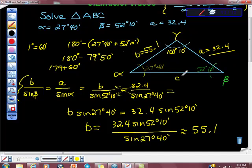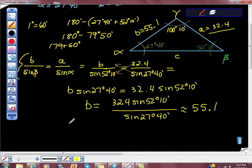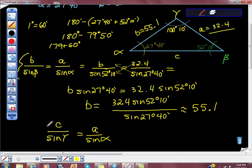That would leave us with C to do. I'll start you on it, but I'm not going to finish it with you. I would say C over sine of gamma equals A over sine alpha, and I would repeat in a very similar way to what we did up here.